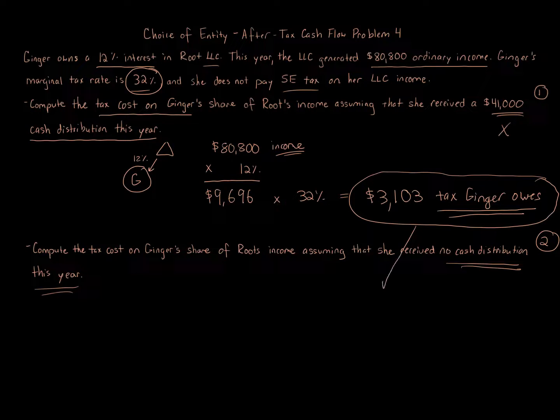It's the same result, the exact same answer. Same answer because all we're focusing on is what is the tax owed on this amount. So it's the same $3,103 tax that Ginger owes in this amount.